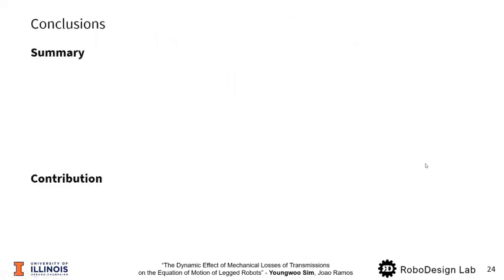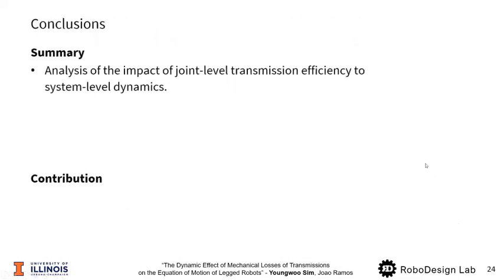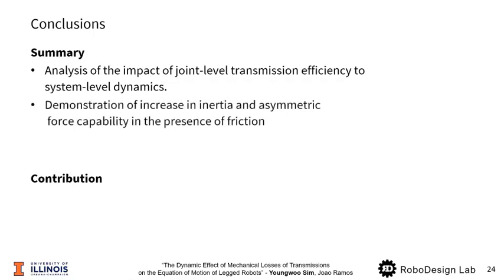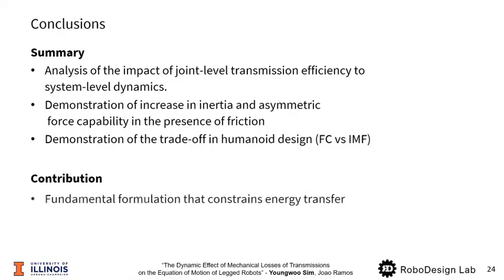Conclusions. To summarize, this paper provides an analysis of the impact of joint-level transmission efficiency to system-level dynamics. Also, it demonstrates increase in inertia and asymmetric force capability in the presence of friction. Lastly, it demonstrates the trade-off relation in Humanoid design between the force capability and the impact mitigation factor.